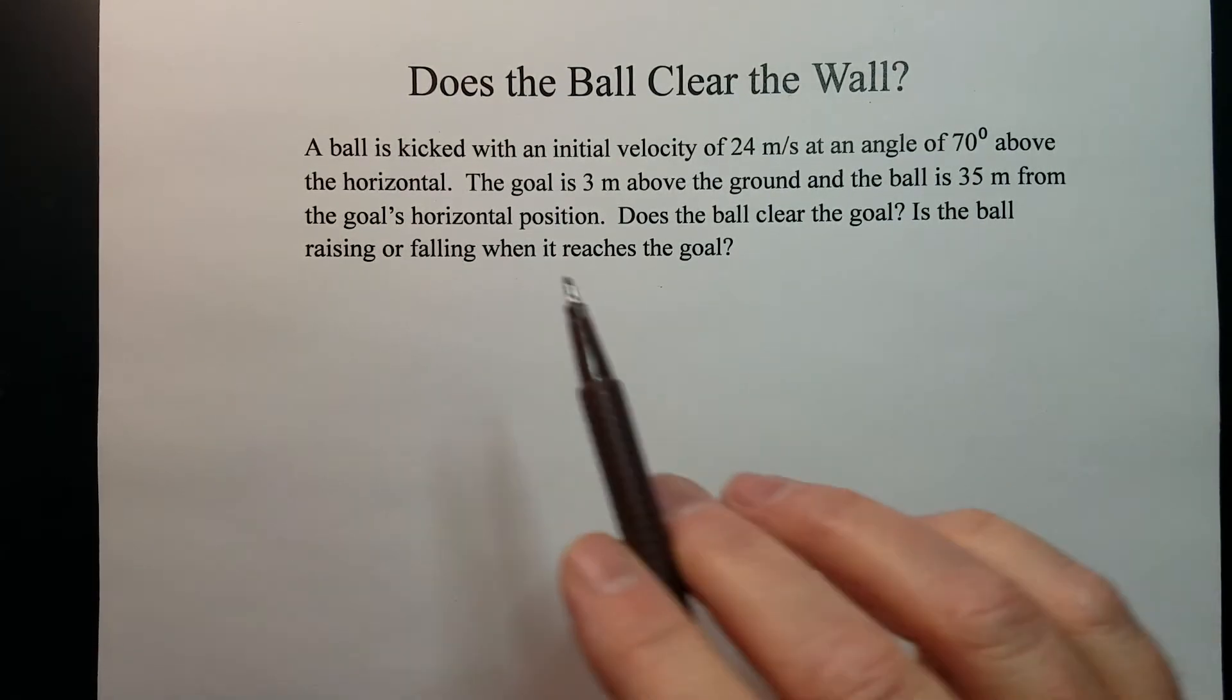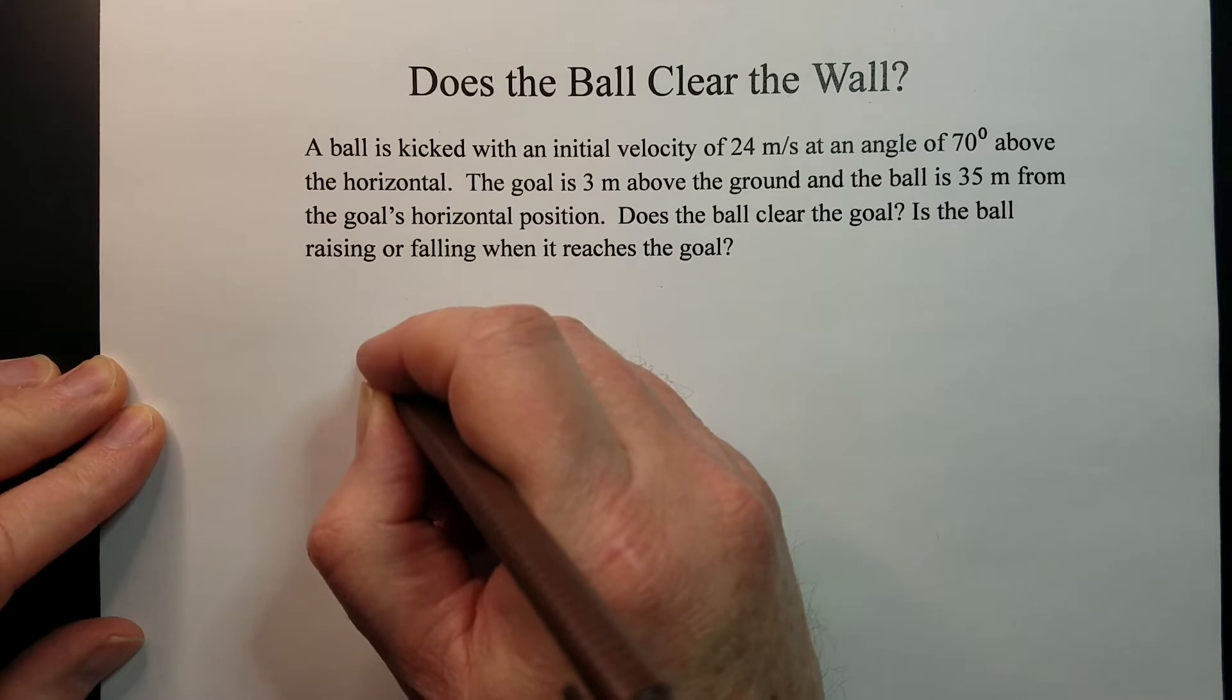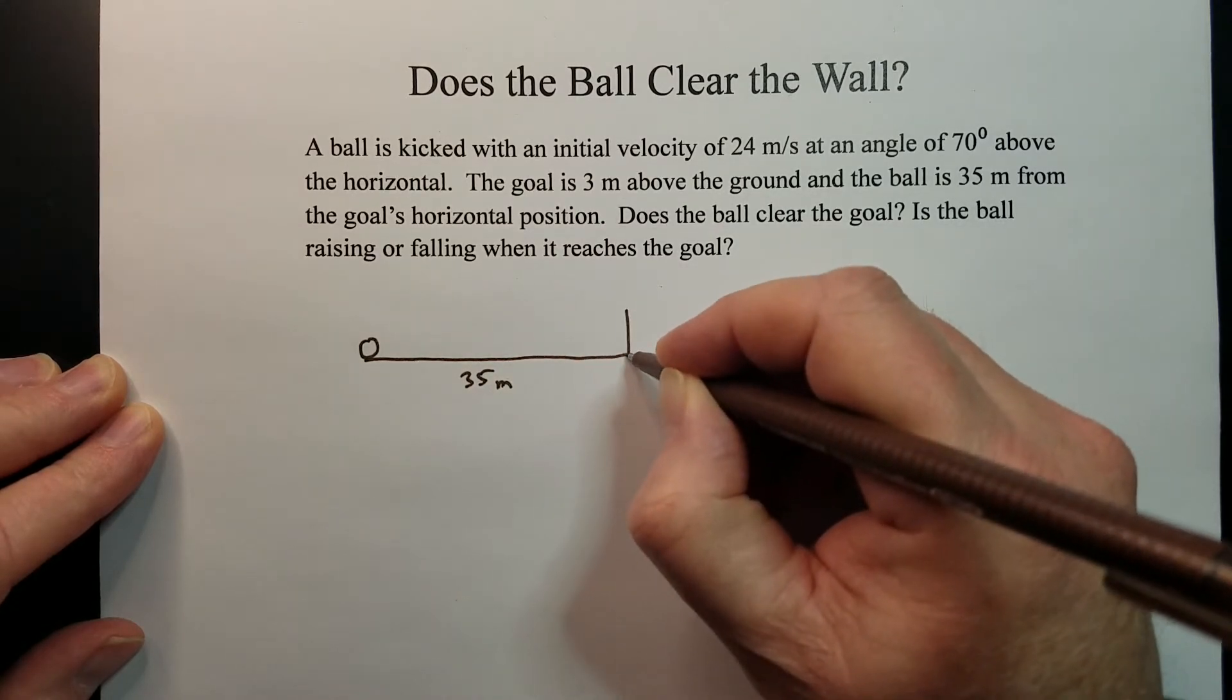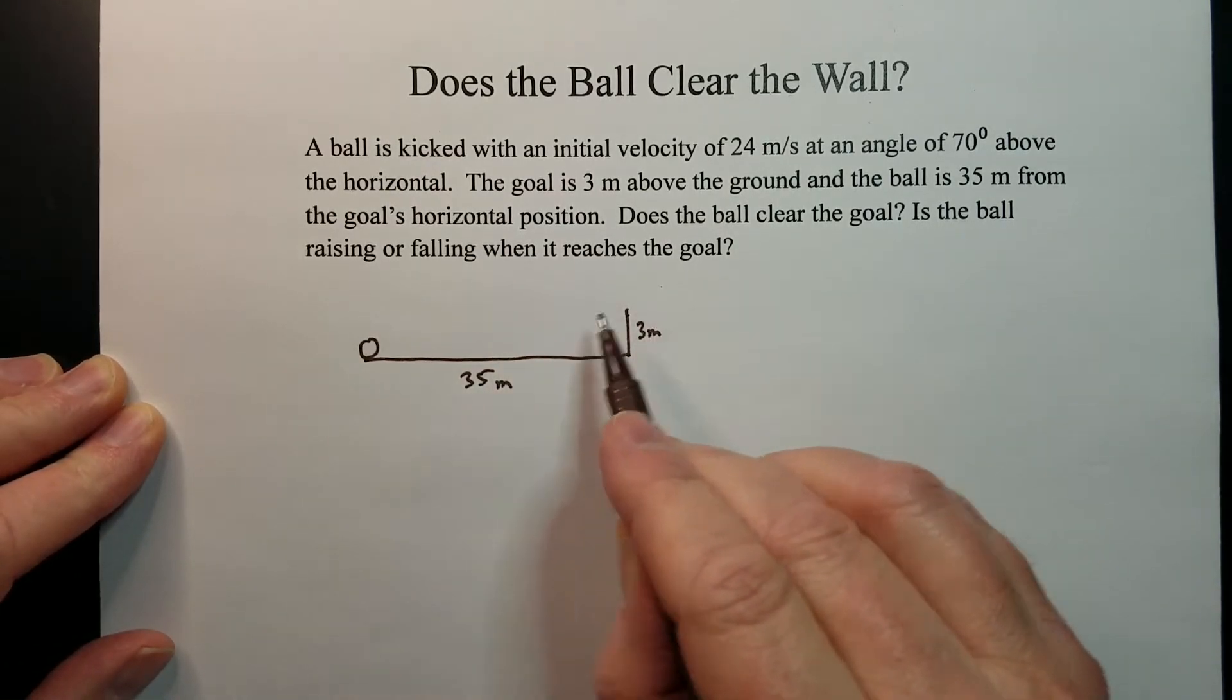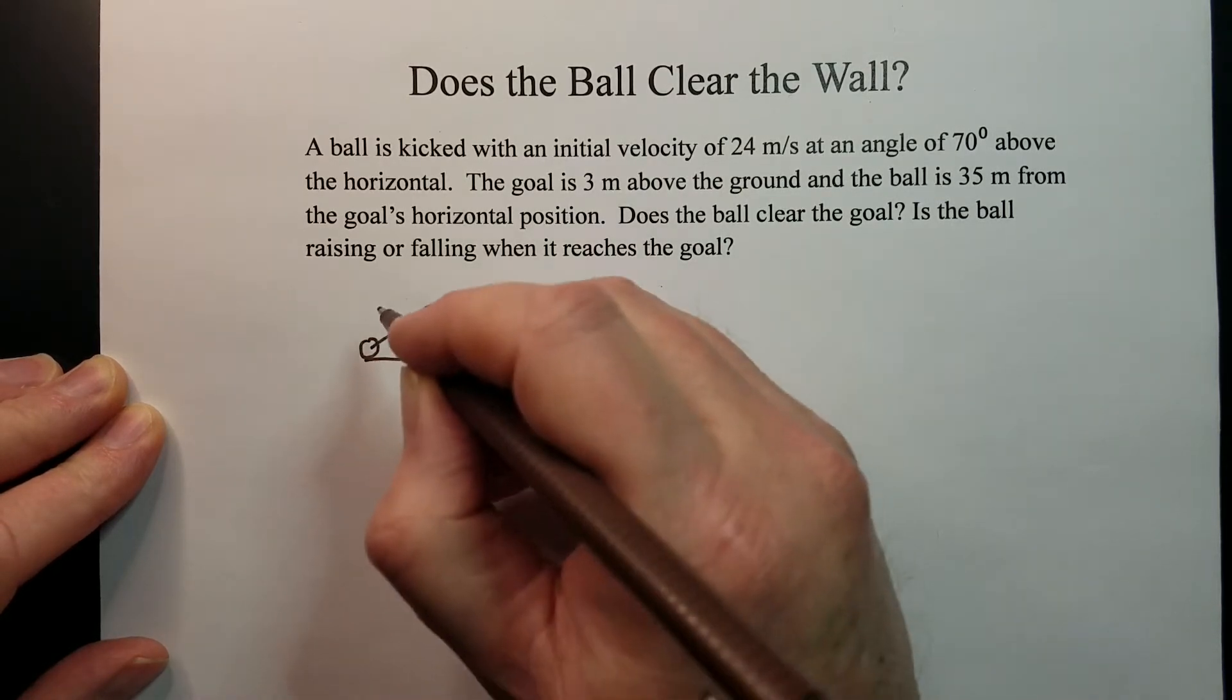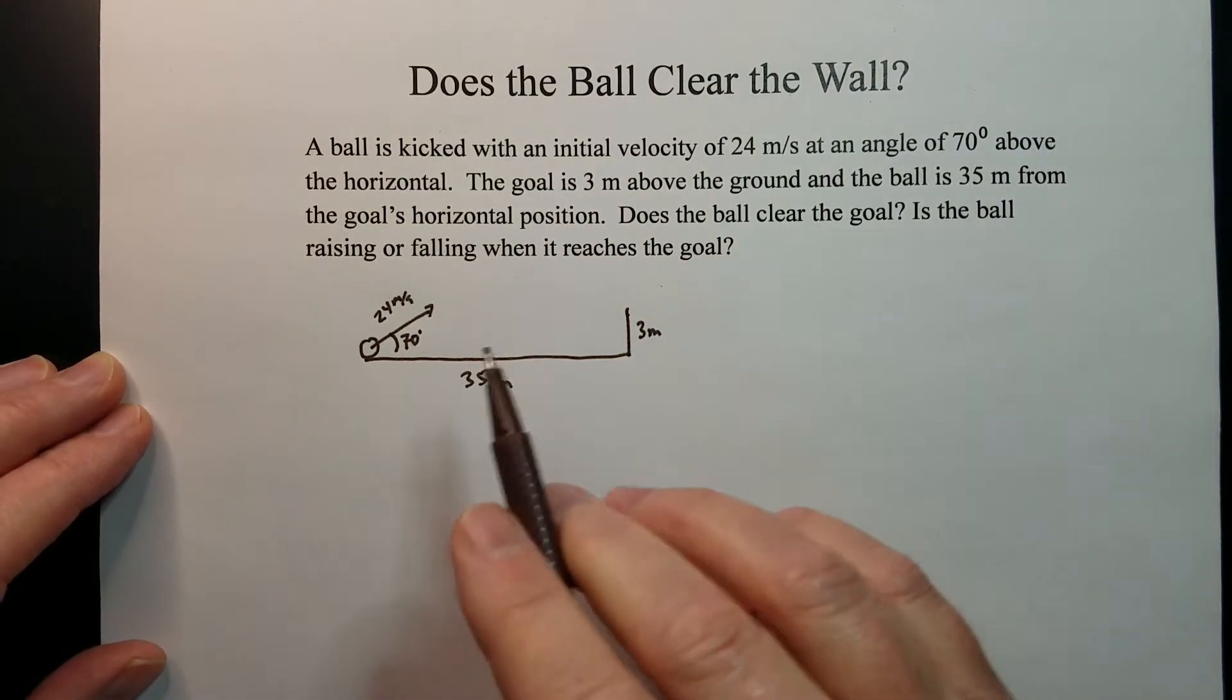So we've got one where a ball is kicked at 24 meters per second at an angle of 70 degrees. And we want to figure out if that ball that's 35 meters out from the goal or wall, and the wall is 3 meters tall, if that ball actually clears that wall. And so it's initially hit with a velocity of 24 meters per second at an angle of 70 degrees above the horizontal. And so we want to know if that makes it or not.